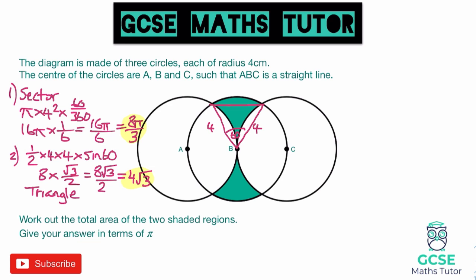Step 3: work out the area of the segment. We have the area of the sector and the area of the triangle, so we subtract them. Area of segment = 8π/3 − 4√3. You could simplify by making a common denominator, but it's fine to leave the answer like that for the moment.